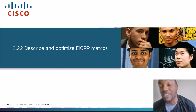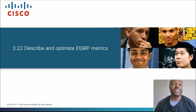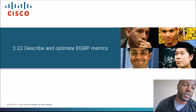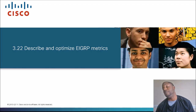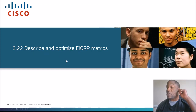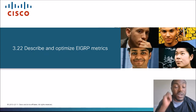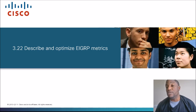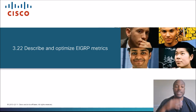Today's topic is one that got me stuck for a little bit. It's section 3.22, Describe and Optimize EIGRP Metrics. Notice it says Describe and Optimize, so we don't really have that much hands-on to do. This is the topic in the CCNP Route exam, exam code 300-101 version 2.0. Let's take a look at the exam blueprint — see where it came from, where we're headed.